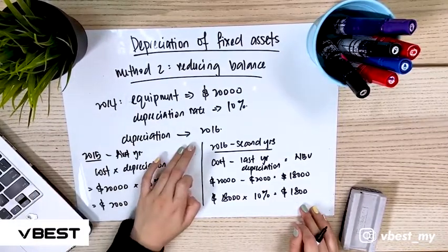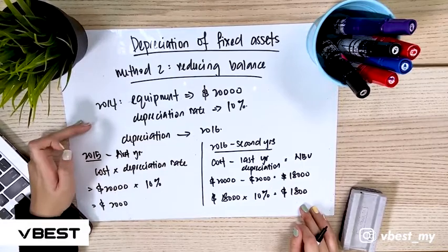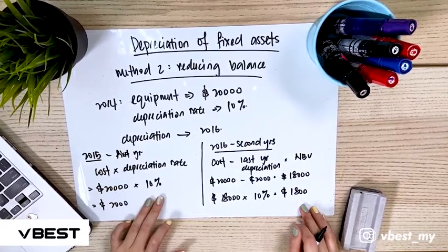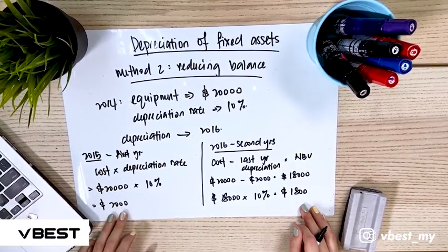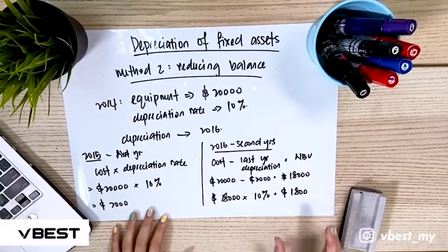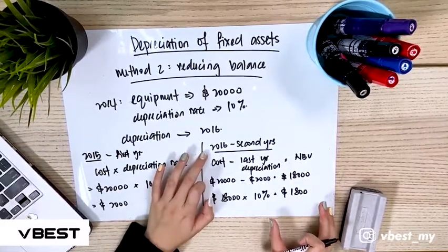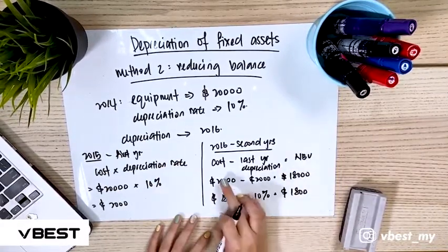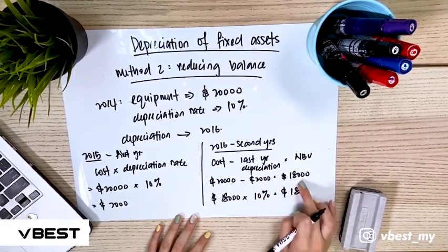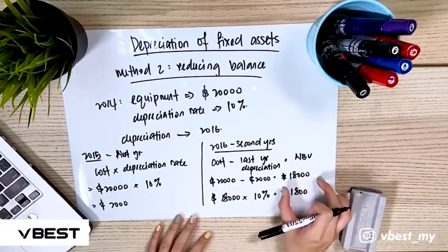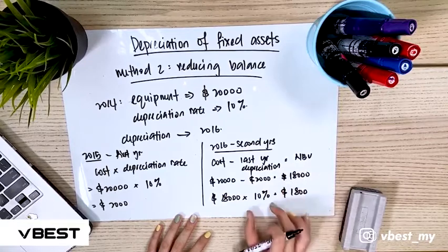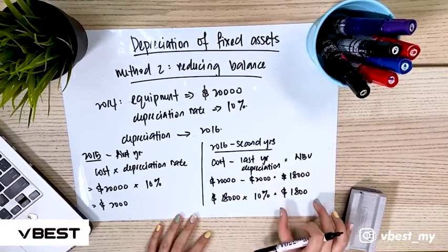So to summarize: for the first year we use the cost times the depreciation rate. For the second year, we take cost minus the previous year's depreciation to get the net book value, then multiply the net book value by the percentage to get the final answer. Thank you.